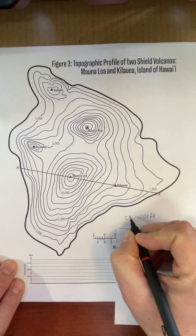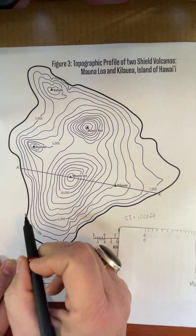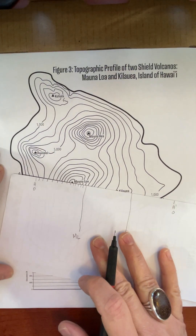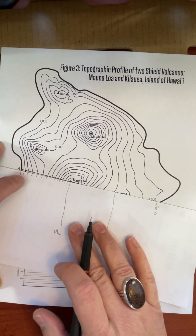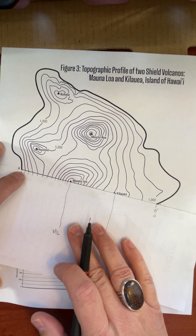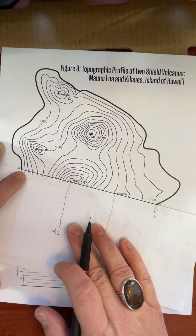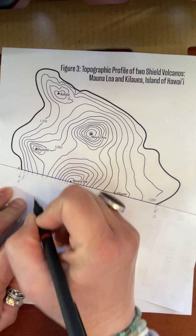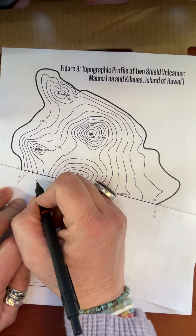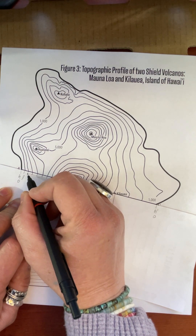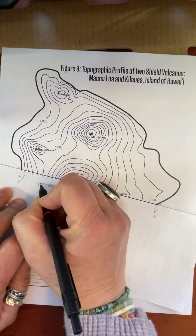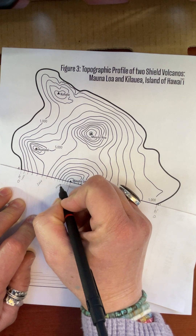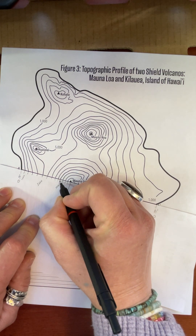I'll abbreviate it: CI is our contour interval. That means any time you go from one contour to the next, you're going up one thousand feet. Putting back my paper and re-aligning it — making sure my lines are in the right spot — I can say this one is ten thousand. I'll mark each one: one thousand, two, three, four, five thousand, six, seven, eight, nine, ten thousand. I'll make this line a little longer so I don't get mixed up.